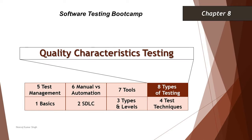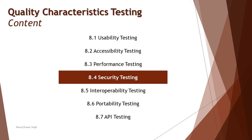Hello friends, greetings for the day. Welcome back to another tutorial on our software testing boot camp, where we are talking about the fundamental concepts of software testing. We are in chapter eight, talking about quality characteristics testing, continuing ahead with our next segment: 8.4 security testing. Today we'll be understanding what security testing is all about and how it helps an organization and test team achieve great security.